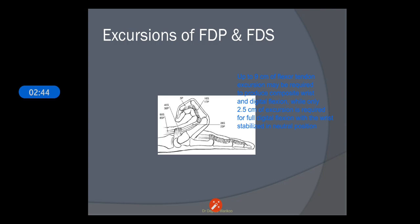Next is the excursion of the FDP and FDS. Up to 9 cm of flexor tendon excursion may be required to produce composite wrist and digital flexion, while only 2.5 cm of excursion is required for full digital flexion with the wrist stabilized in neutral position.